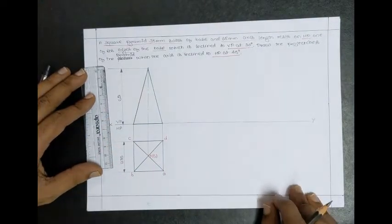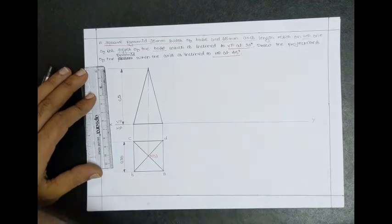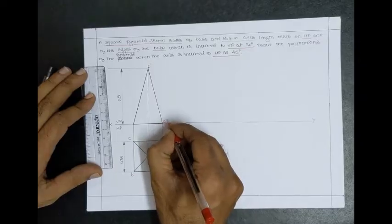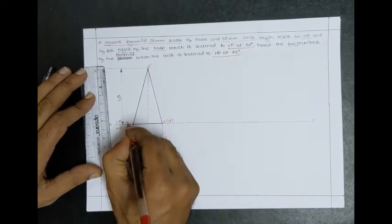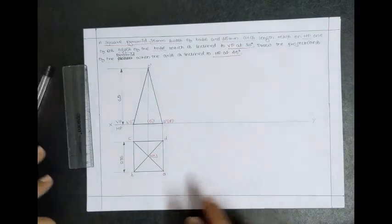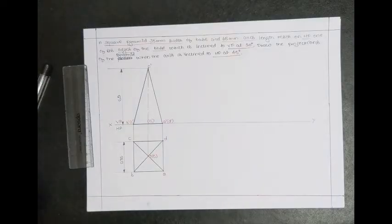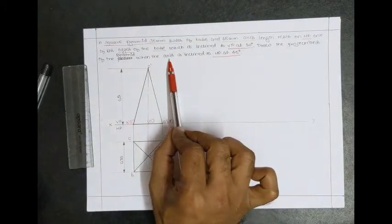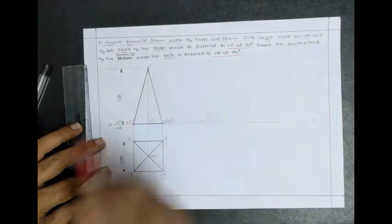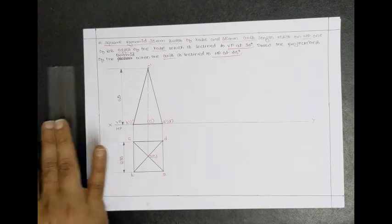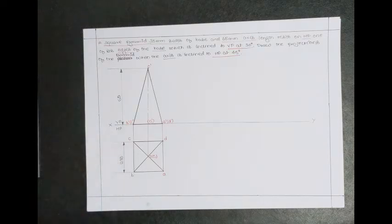This completes the first position. Annotate it: this is O the apex, and from here: A-dash, D-dash, B-dash, C-dash, and axis O1-dash. Since the pyramid is resting on the HP, we consider the HP inclination first. The inclination with respect to the axis is very important — the HP inclination is given with respect to the axis. Now we need to do the angular dimension.